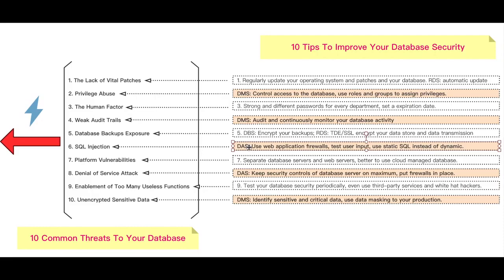Additional techniques for preventing SQL injection attacks include using static SQL instead of dynamic SQL, proper validation and testing of user input, forcing appropriate limits to prevent buffer overruns, and avoiding the concatenation of user input to SQL. We recommend using DAS (Data Autonomy Service) on Alibaba Cloud, which can do automatic detection to prevent SQL injection.